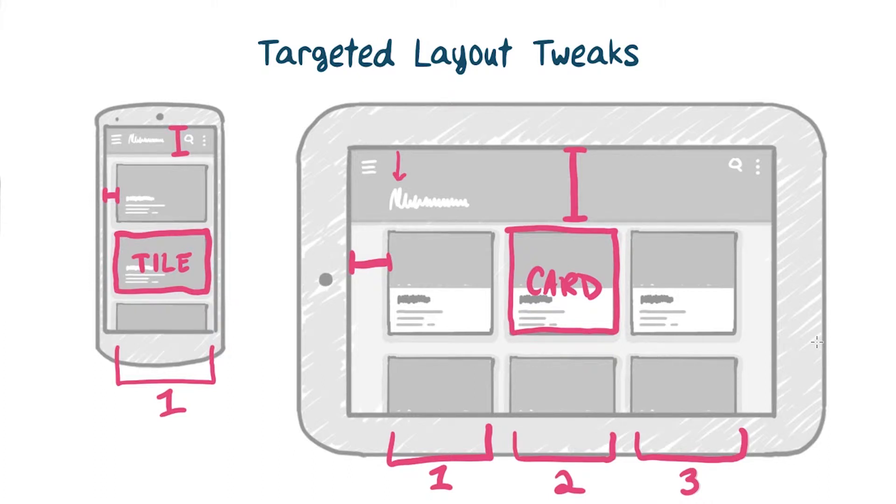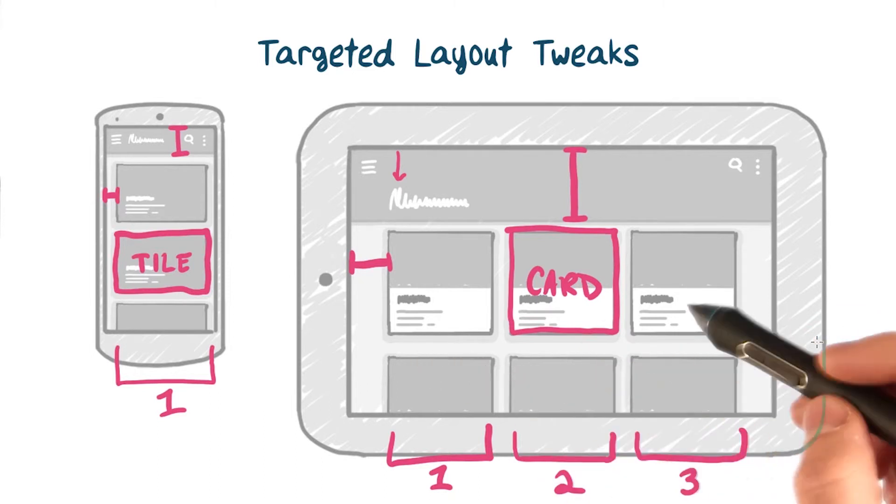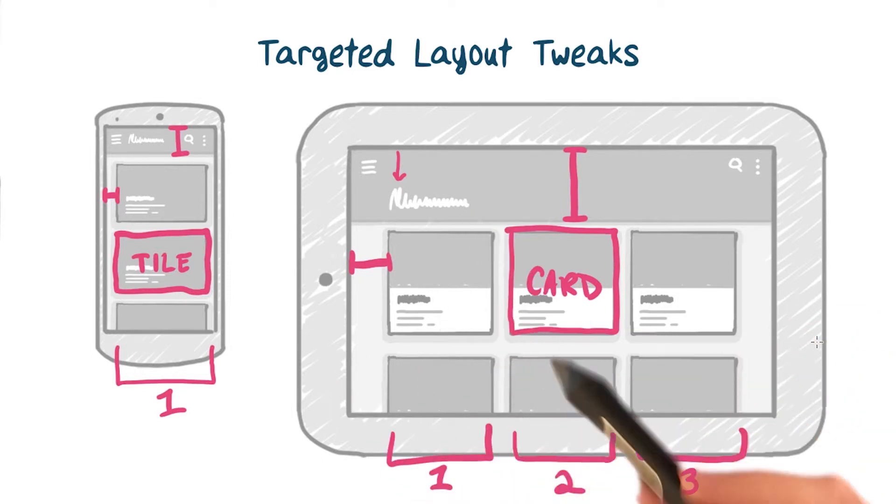Layout includes help reduce code duplication quite a bit. But for more targeted layout adaptations, we can get even more fine-grained. Using all those resource qualifiers we learned about, we can vary everything from number of columns to heights and widths to margins and spacing and beyond. Let's take a look.